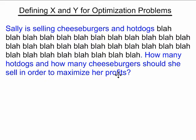When you're defining your variables x and y, you should be looking at the question at the end to give you a hint on how to do it. Since it said how many hot dogs and how many cheeseburgers, the number of hot dogs and the number of cheeseburgers should represent your x and your y.